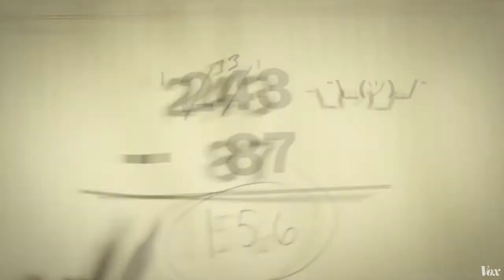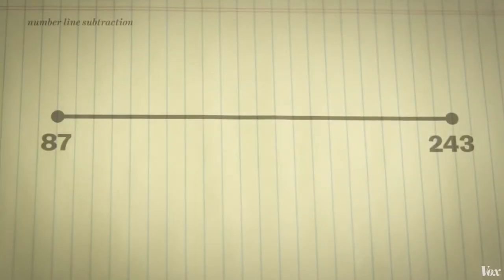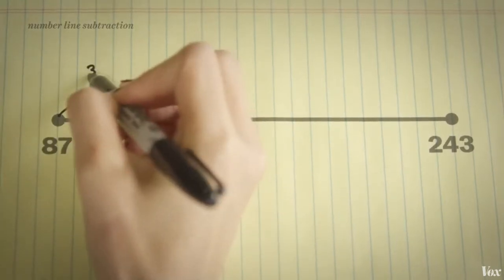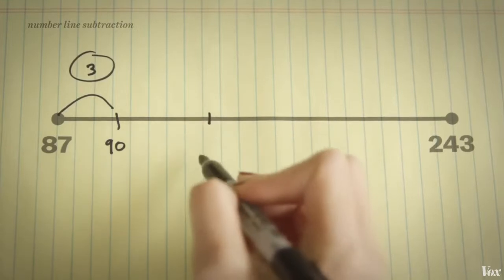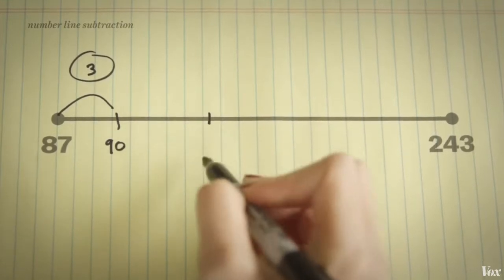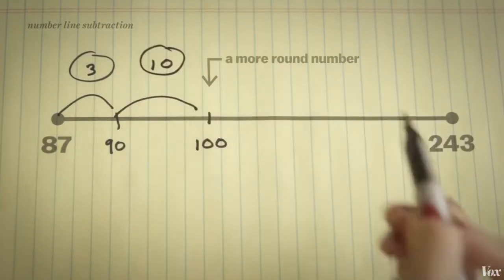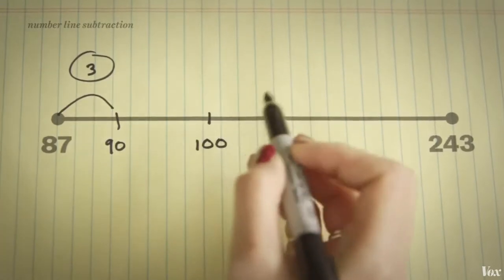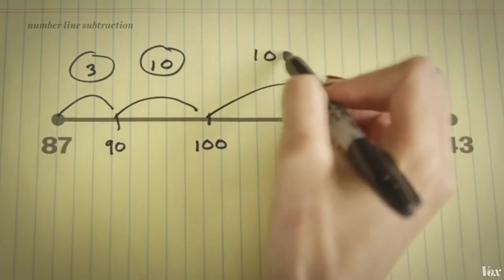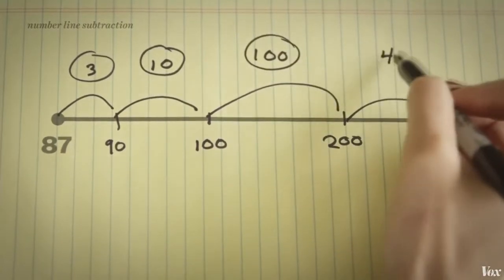And so one of the ways the Common Core tries to explain this is with a number line. Because subtraction is really about the distance between two numbers. You start with the number you're subtracting from, so you go up in little hops to a more round number. You take it to 100. So you've sort of broken down the distance and you add these numbers together.